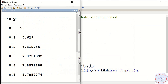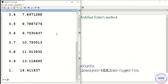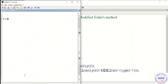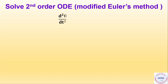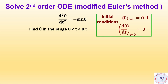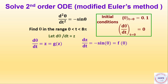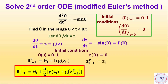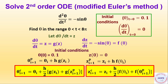The output shows the different values of y at different values of x. Finally, solving a second-order ODE using modified Euler's method — here we use a harmonic oscillator: d²θ/dt² = −sin θ, finding θ for t in [0, 8π]. Initial conditions are θ₀ = 0.1 and dθ/dt = 0. Setting dθ/dt = z gives dθ/dt = z (function g) and dz/dt = −sin θ (function f), and the modified Euler method gives corrected values for θ(i+1) and z(i+1).